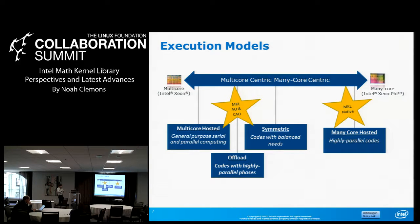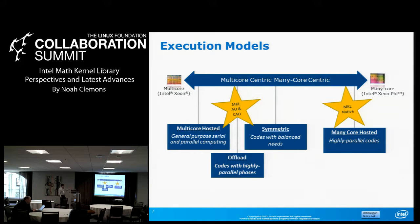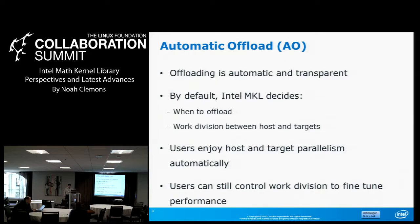Those with balanced building block BLAS functions can use both host and coprocessor in heterogeneous fashion — that's the MKL automatic offload mode. MKL native is for highly parallel codes and is exclusively many-core hosted. Offloading is automatic and transparent with automatic offload. By default, we decide when to offload and the work division, but you can still fine-tune that work division. How do you use automatic offload? You either call the function MKL MIC enable or just set the environment variable, and the runtime handles all data transfer and execution.